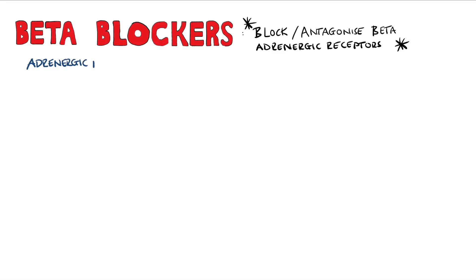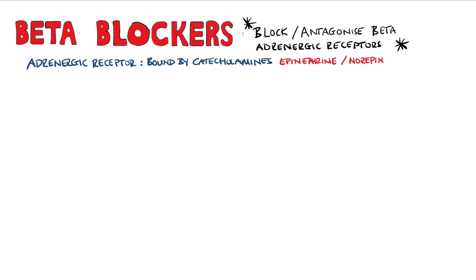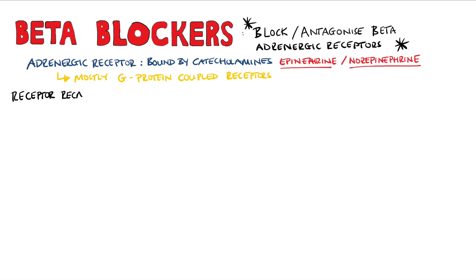Let's quickly recap what the different adrenergic receptors are responsible for. An adrenergic receptor is a receptor that is bound by catecholamines such as epinephrine and norepinephrine. We have alpha-1, alpha-2, beta-1, beta-2, and even beta-3 adrenergic receptors, which are usually G-protein coupled receptors that ultimately lead to an increase in cyclic AMP, leading to downstream effects.